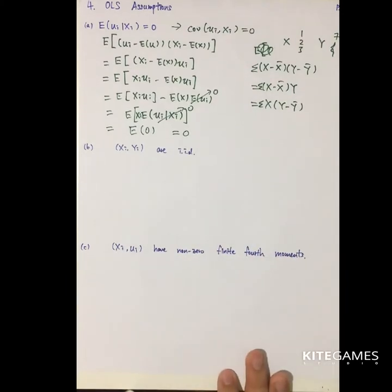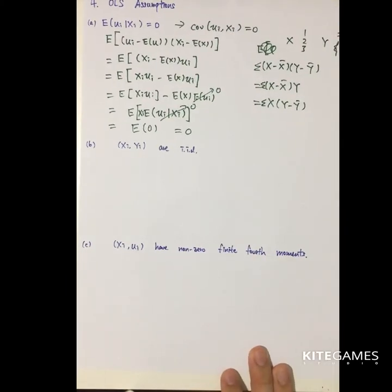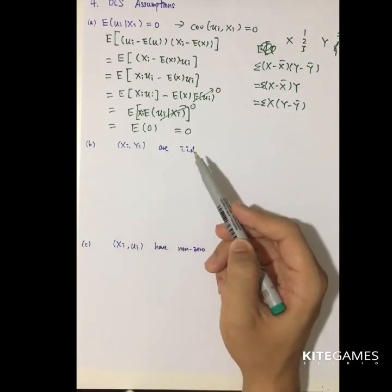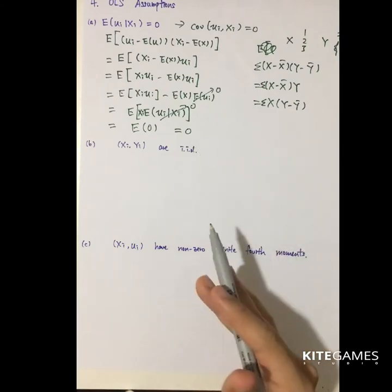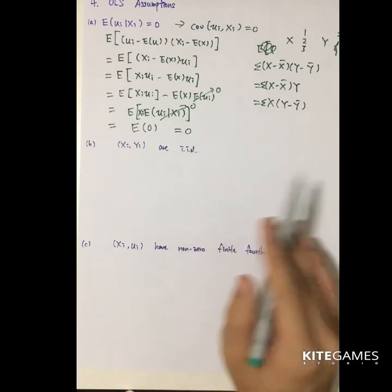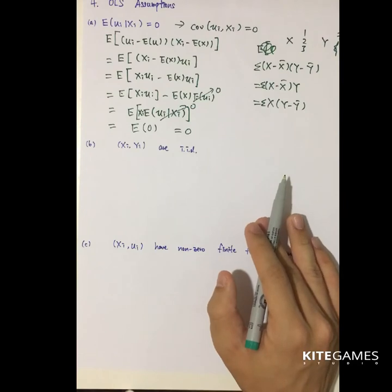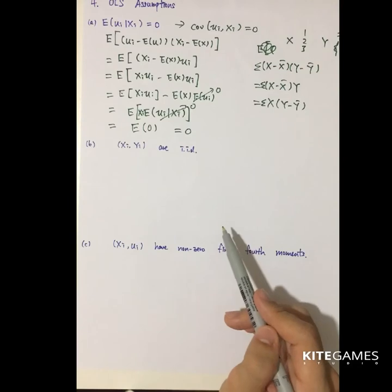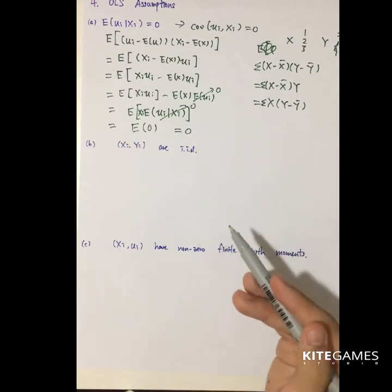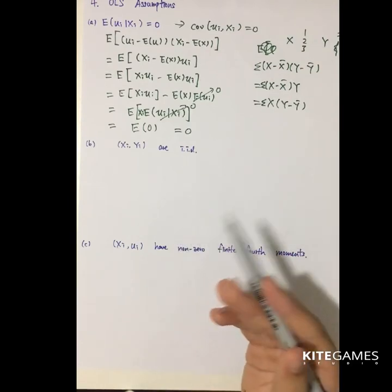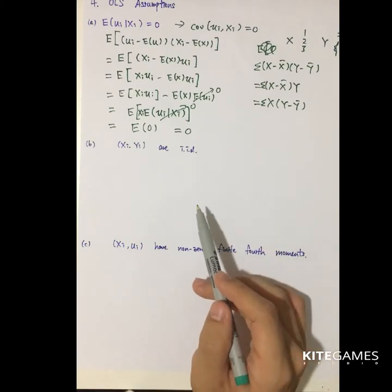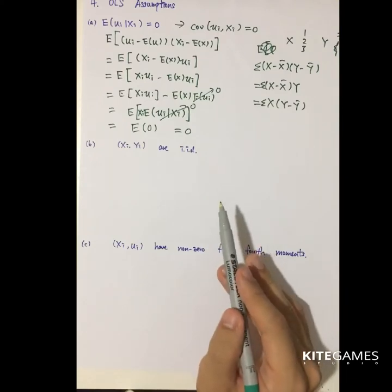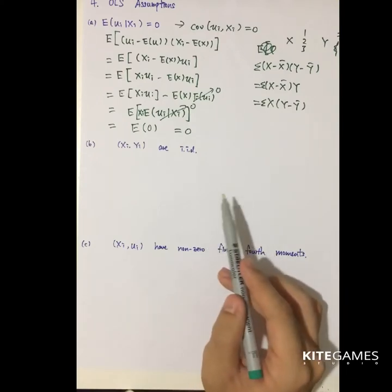The other two assumptions are quite descriptive. The second one is that x_i and y_i are i.i.d. That means we need to do random sampling rather than selecting specific data. For example, if I want to test the average height of secondary school students, I need to randomly draw from various clubs or years — I cannot just select data from the basketball team, otherwise I will have some bias toward the population.